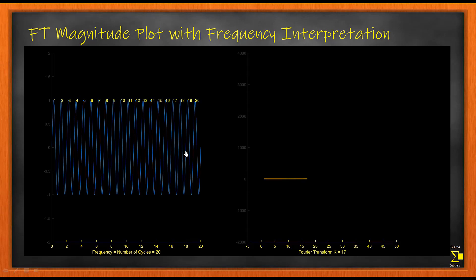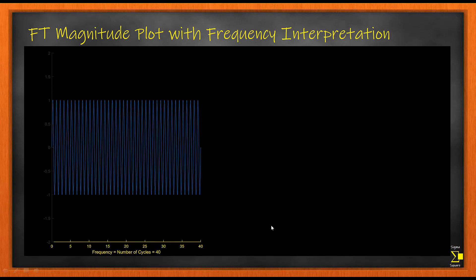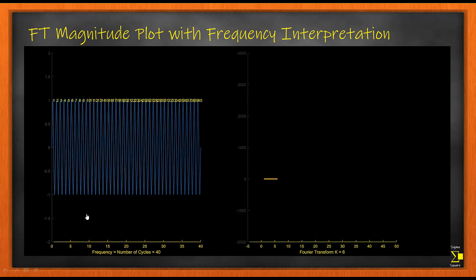Here you have the number of cycles as 20, so your Fourier Transform has a peak at 20. Here you have the number of cycles to be 40. Now your Fourier Transform has a peak at 40.